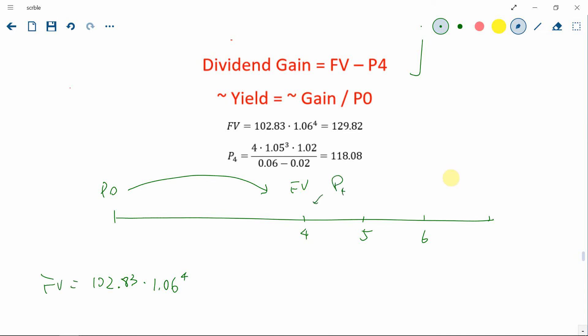And the other one is the price at time four. Price at time four, we use the dividend discount model again. So we need to calculate all future dividends. So in particular, we need dividends at time five, time six and so on.